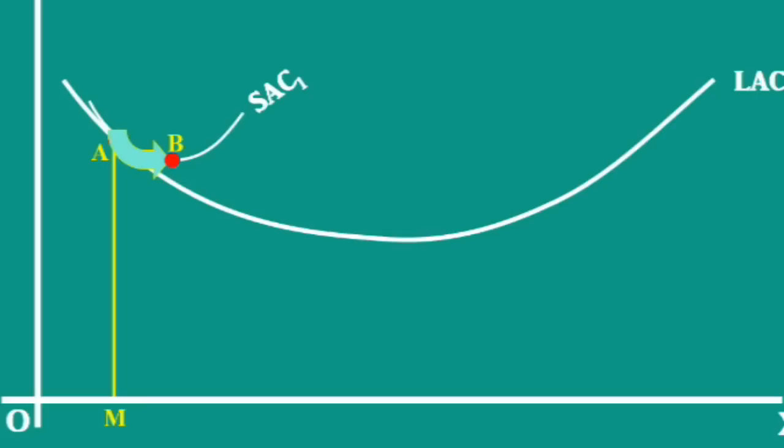Only such points can be tangential to the long run average cost curve when it slopes downward. Minimum point B of the SAC1 can never be tangent to long run average cost curve.